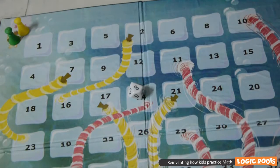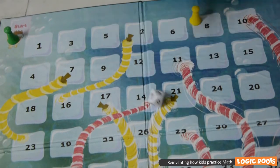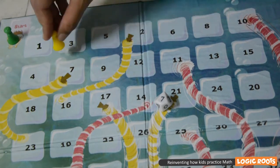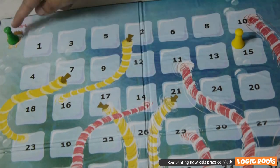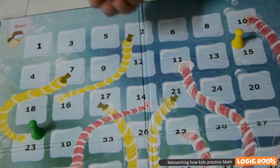When you play the game, observe that kids will not add just in their own turns but also when other kids are playing just to check that the other players are not cheating. That is the power of the game.